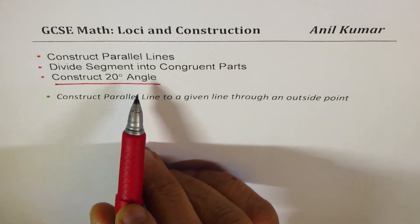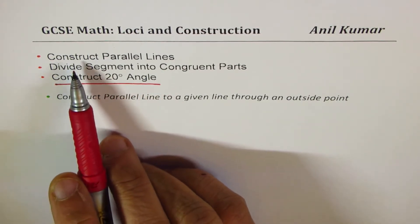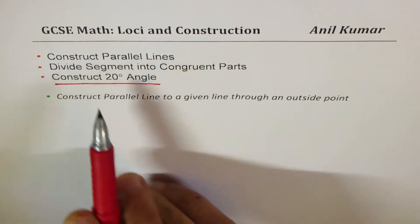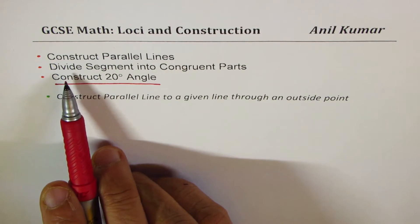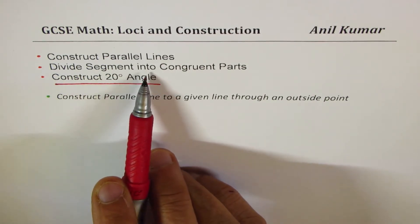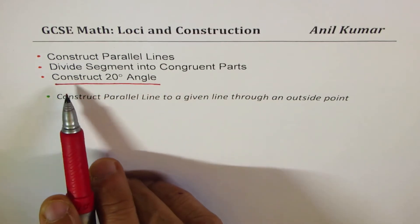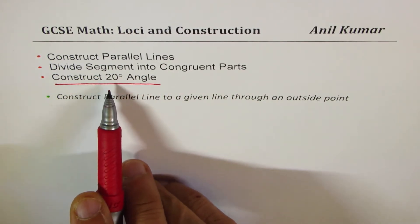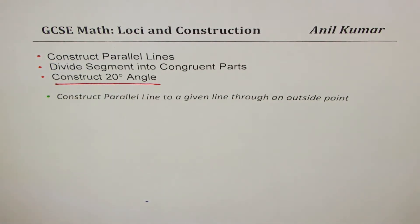So to construct a 20 degrees angle I'll begin from the very beginning. We'll review how to construct parallel lines, then learn the concept of dividing segments into congruent parts, and thereby divide a 60 degrees angle into three parts to get a 20 degrees angle. I hope the concept is clear.